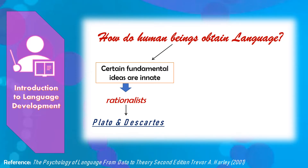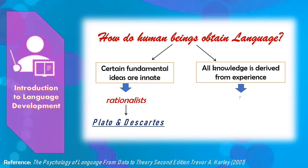Philosophy has produced two contrasting views on how humans obtain knowledge. The rationalists, such as Plato and Descartes, maintained that certain fundamental ideas are innate — that is, they are present from birth. On the other hand, the empiricists such as Locke and Hume rejected this doctrine of innate ideas, maintaining that all knowledge is derived from experience.